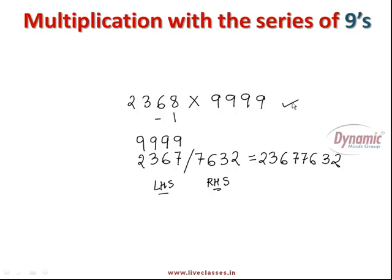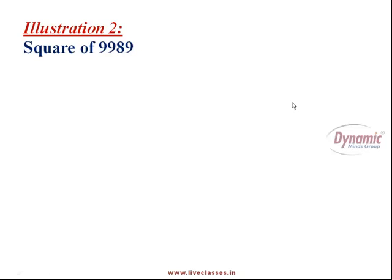So you can amaze your friends by doing multiplication of any number by the series of 9's like this in seconds. But there might be some questions coming into your mind. What if the numbers are not 9's? If it is 2368 into 8432, then what will I do? You will get the answers to all your queries. But before going into that detail, I want to show you some more illustrations, just to give you an insight about the magic of Vedic Mathematics.